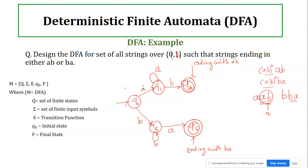Now we think about the final states. For ending-with problems, we cannot simply add a self-loop of 'a' and 'b' at the final state — we must strictly end with either 'ab' or 'ba'. For q2: reached by reading 'ab'. If q2 gets 'a', the string is now ending with 'ba', so we move to q4, the state responsible for ending with 'ba'.